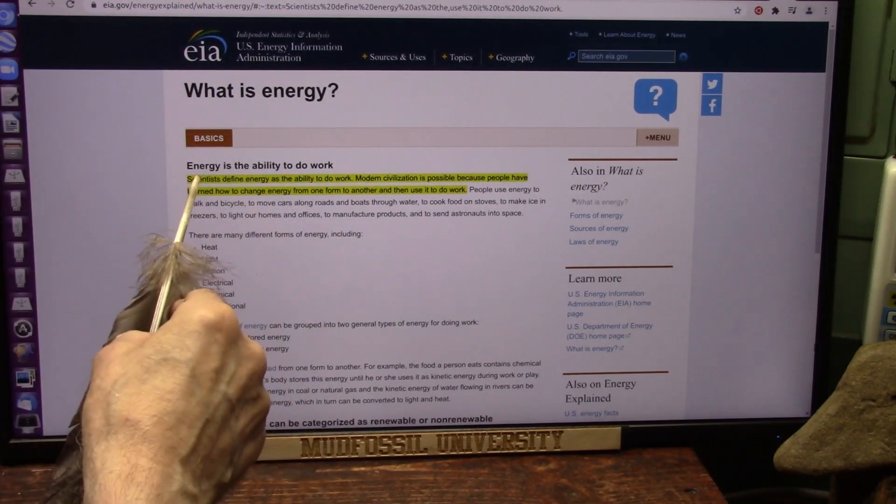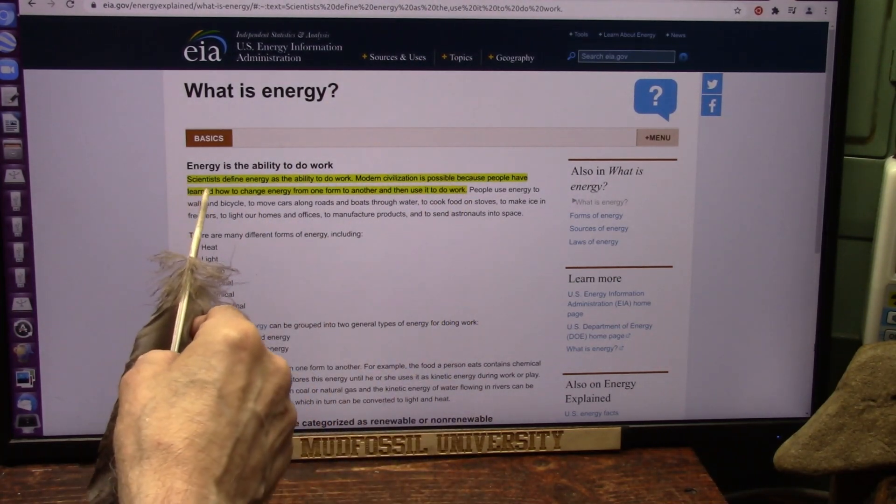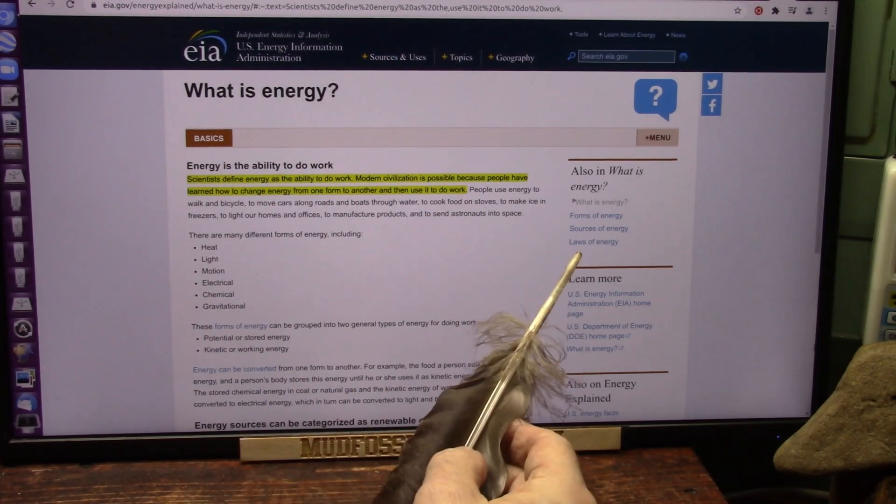What is energy? Energy is ability to work. That is not wrong. Scientists define energy as ability to do work. I agree, it is.